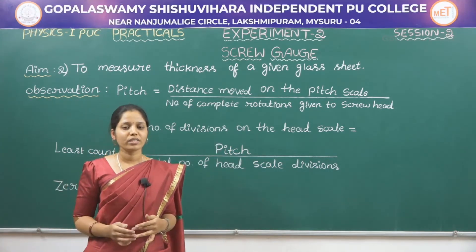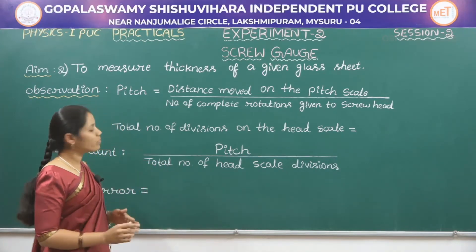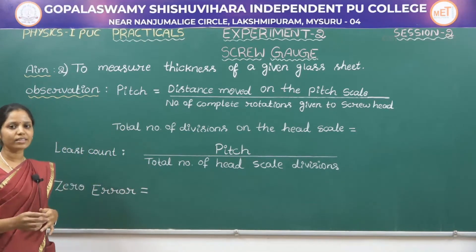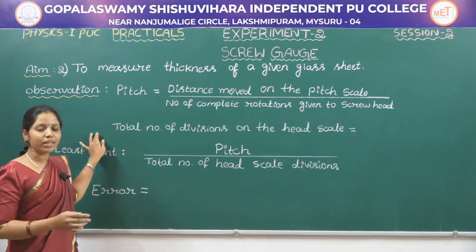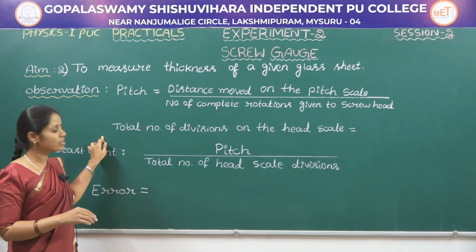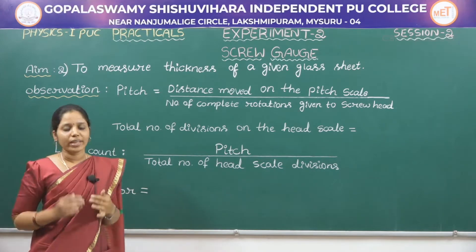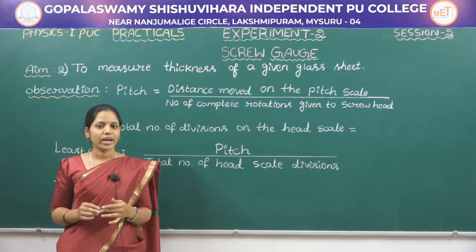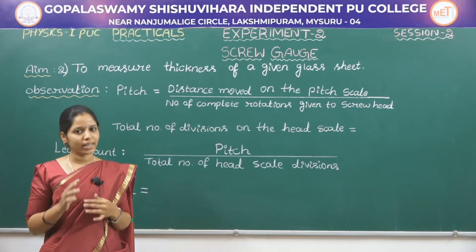First we have to measure the thickness of the glass sheet. Before that, let us discuss the observation part. I had already explained this in detail in the last class, so now I will brief it once again. In a screw gauge we have two scales: one is the pitch scale and another one is the head scale.